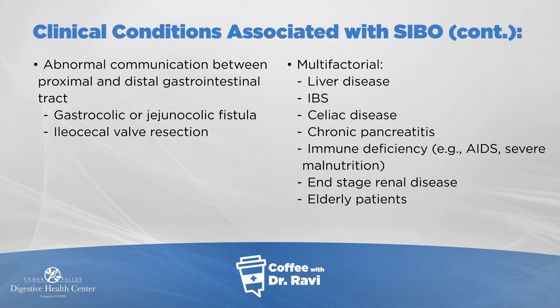There can also be communication that develops between the small bowel and the colon in Crohn's disease, or if there is surgery that shortens the small bowel. All of these changes — due to surgery, disease conditions, or decreased movement — cause bacteria to grow. General conditions such as liver disease, celiac disease, pancreatitis, and renal disease also enable bacteria to multiply through a number of different mechanisms.